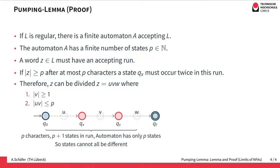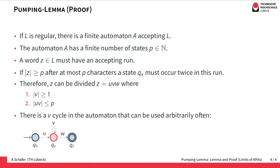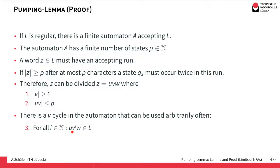Since qx occurs twice there must be a non-empty word between the two occurrences, so the length of v is greater than or equal to one — that is the first condition. We also know that after at most p characters qx must occur twice, so the length of u·v must be less than or equal to p — that is the second condition. Since there is a cycle v in the automaton, this cycle can be used arbitrarily often, and thereby we can accept all words u·vⁱ·w: v⁰ means we skip the cycle, v² means we go through it twice, and so on. Therefore we have an accepting run for all these words, so all these words must be in the language L, and that completes the proof.